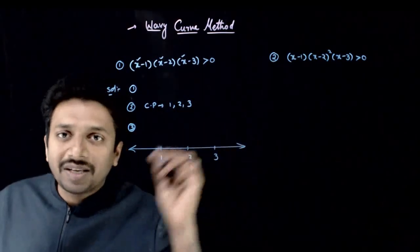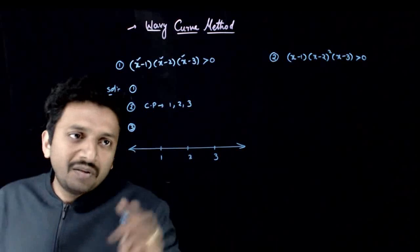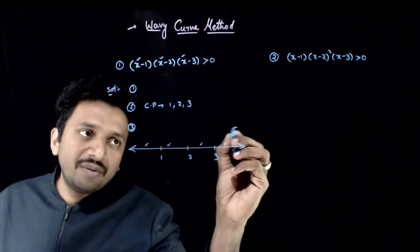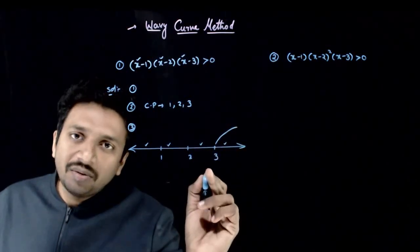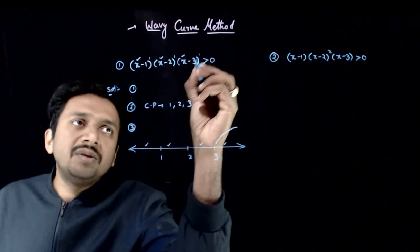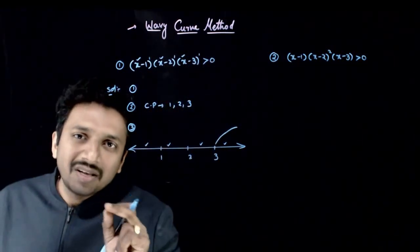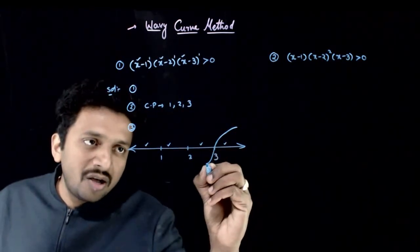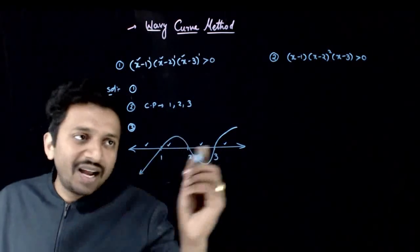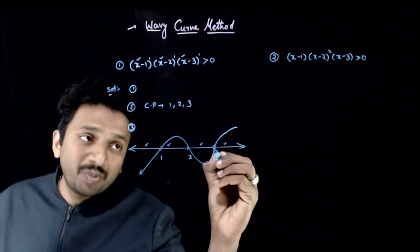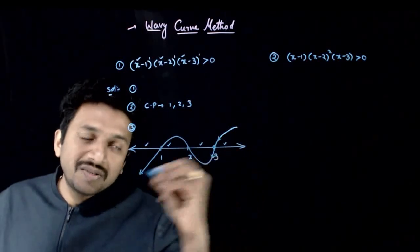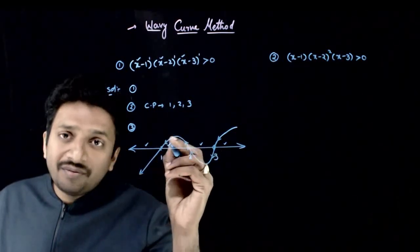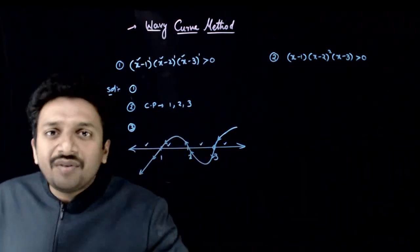We start from above the x-axis on the rightmost interval. We have 4 intervals. In the rightmost interval, we start from the positive direction, that is from the top. All the powers of each factor are odd, which means the sign change happens at each of these critical points. So the wavy curve can be directly drawn: at point 3, the curve goes from positive side to negative side; at x = 2, from negative to positive; and at x = 1, from positive to negative.